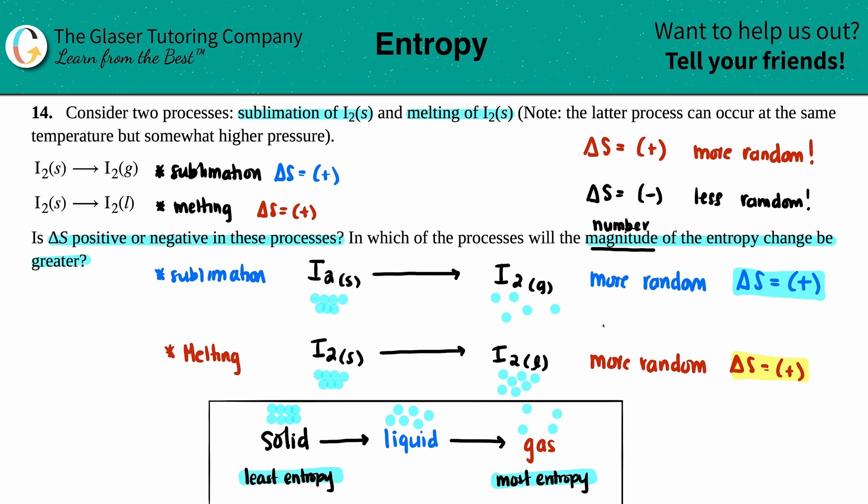Back to chem, though. So they just want to know which one of the numbers is going to be the biggest one—the magnitude of that entropy change. If we had to take an educated guess, which one would have the greater positive value?